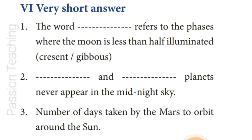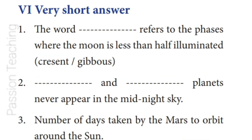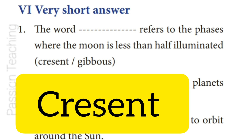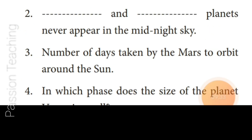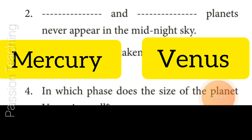Sixth Roman Letter: Very Short Answers. Question 1: The word dash refers to the phases where the Moon is less than half illuminated — Answer: Crescent. The word Crescent refers to the phases where the Moon is less than half illuminated. Question 2: Dash and Dash planets never appear in the midnight sky — Answer: Mercury and Venus.